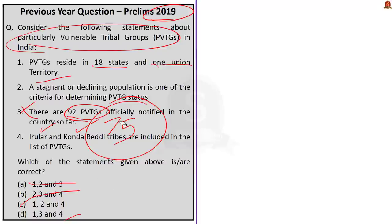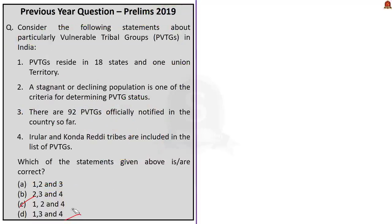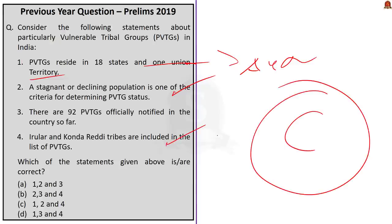Let us assess the other statements. Statement 1 — PVTGs reside in 18 states and one union territory — is correct; that union territory is Andaman and Nicobar Islands. Statement 2 — a stagnant or declining population is a criterion for PVTG status — is also correct. Statement 3 is incorrect; India has only 75 PVTGs. Statement 4 — Irular and Kondareddi tribes are included in the list — is correct. So the answer is Option C: 1, 2 and 4.